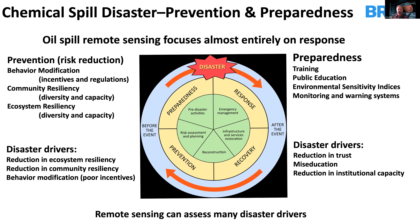There are also many drivers of disasters — this is kind of the standard disaster science. As part of the cycle, you want to modify behavior with incentives, regulation, and enforcement, and improve resiliency. This is part of the management that might provide economic cushions within community structures to support response and recovery from a societal or ecosystem point of view. This is a lot of what disaster training involves — we've been seeing monitoring and warning systems, environmental sensitivity indices — and these are all things that remote sensing can help with.